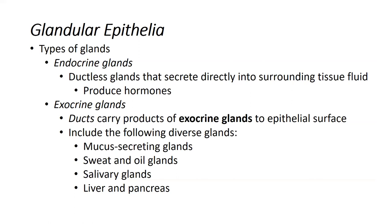The other type of gland is your exocrine gland, and these do have ducts. These glands are associated with ducts, which are channels that carry those secretions out onto the epithelial surface. To backtrack, we mentioned that epithelia had two functions: lining certain body surfaces and cavities, and forming glands. The exocrine glands release their secretions onto the epithelial surface.